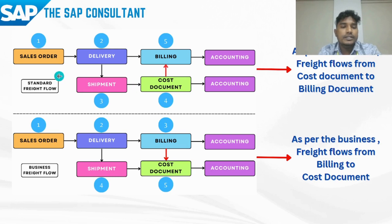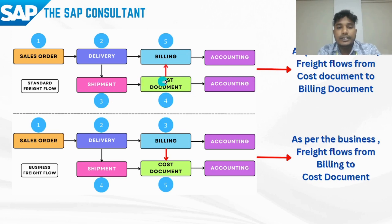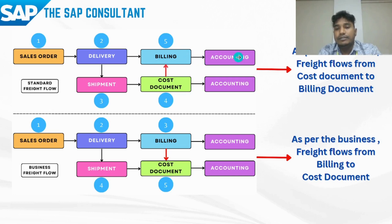In the standard business flow, the sales order is created, then delivery is created, then the shipment document is created, and then the cost document is prepared in which the freight charges are applied. Whatever charges are in the cost document will be transferred to the billing document and the same will be collected from the customer. This is the standard scenario practiced globally.